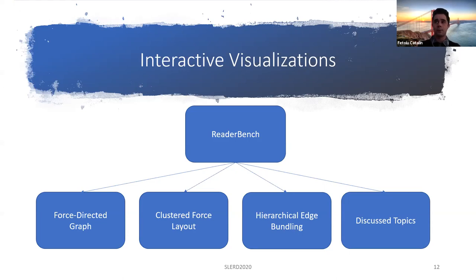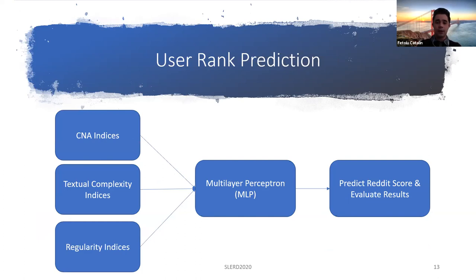All views are based on the clustering of community members into three categories: central users, active users, and peripheral users. Central users are the most active in the community, while peripheral users do not interact much. Regarding user rank prediction, we used all categories of indices and fed them into neural networks of the type multilayer perceptron, which allowed us to train and then predict the Reddit score, and also to evaluate the results.